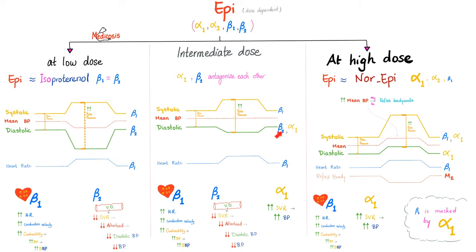Epinephrine and norepinephrine clinical uses. We use them for cardiac arrest. In old movies, doctors used intracardiac epinephrine — striking a syringe directly into the heart. No one uses this anymore. We now use intravenous epinephrine for cardiac arrest. Intramuscular is slower than intravenous, so go with intravenous.